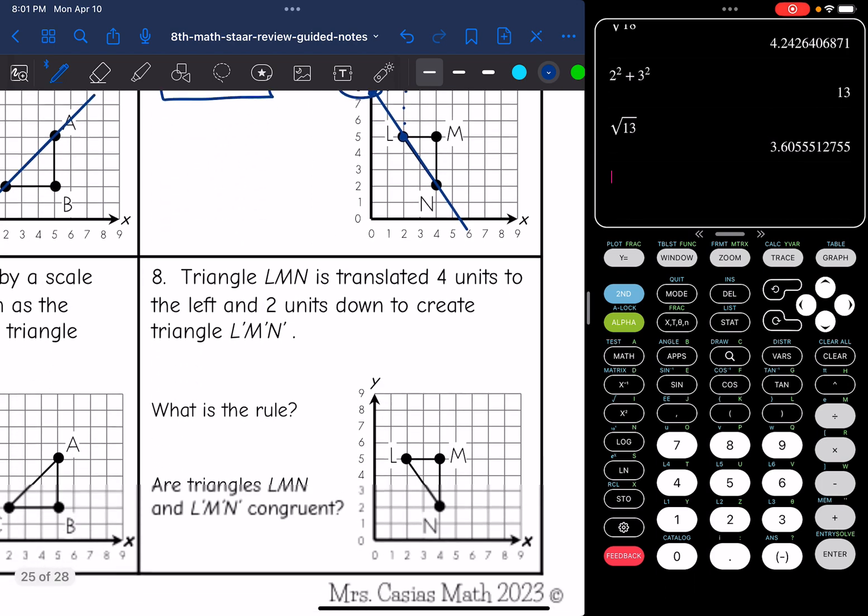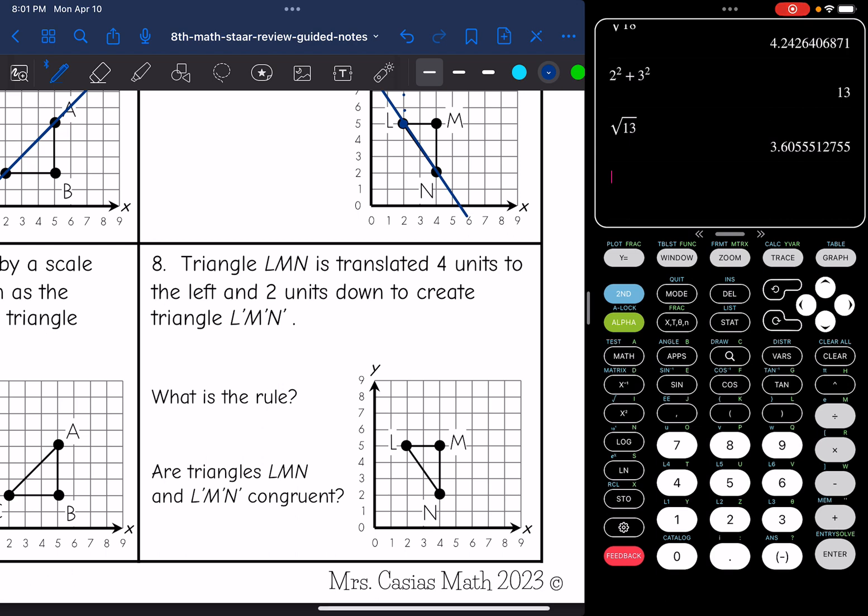And then last question, triangle LMN is translated 4 units to the left and 2 units down to create triangle L', M', N'. What is the rule?